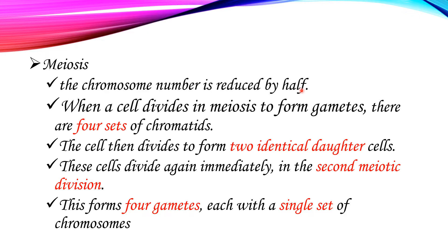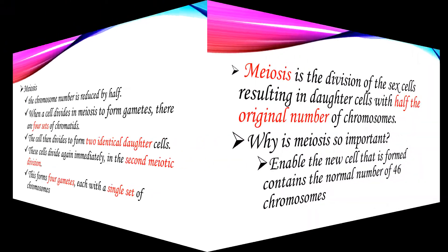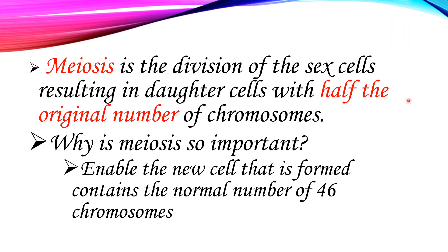Meiosis generally reduces the chromosome number by half. So meiosis is the division of sex cells, producing cells with half the original number of chromosomes. It is a type of sexual cell division where the chromosome number is halved.